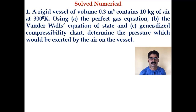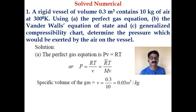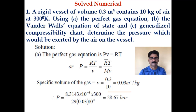These are common problems asked from this chapter in exams. You are given the volume, mass, and temperature, and using three different methods you have to find the pressure exerted by the air on the vessel. For the perfect gas equation, PV = RT, so P = RT/V or P = R̄T/(MV). The specific volume of the gas is volume divided by mass: 0.3 divided by 10 = 0.03 m³/kg.